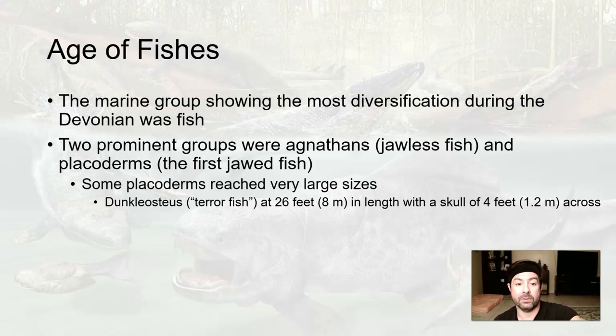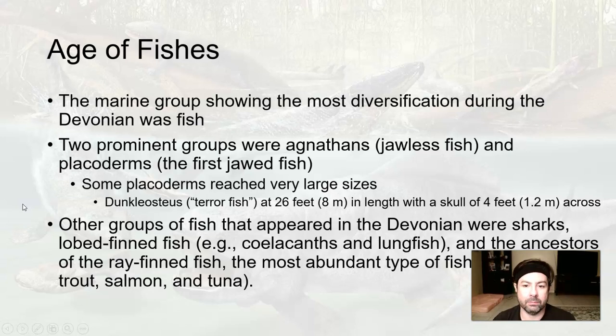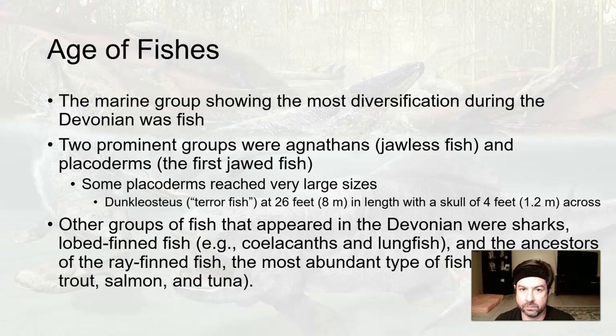The Dunkleosteus, nicknamed the Terrorfish, is 26 feet long with a skull that's 4 feet across — bigger than a person. Sharks start to appear in the Devonian. Lobed-finned fish, for instance lungfish, start to evolve. The ancestors of rays, stingrays, and manta rays also evolve, as do the ancestors of the most abundant fish we see today — trout, salmon, and tuna.